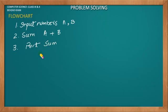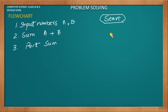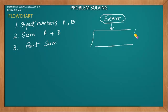Now I have a flow chart. How do I make it? The first step is to start my program. The next step is input — we take input of numbers A and B.